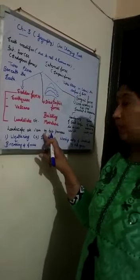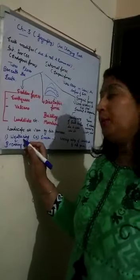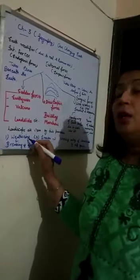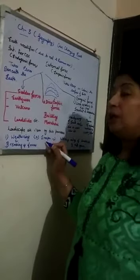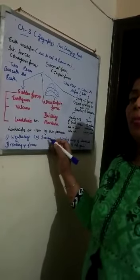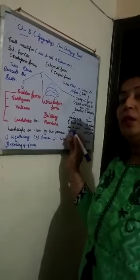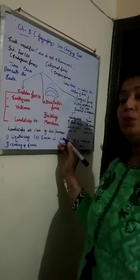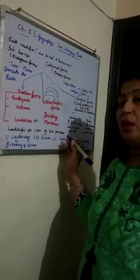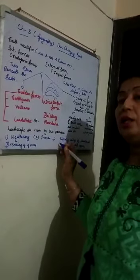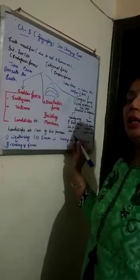The wearing away of the landscape is done by two processes: weathering and erosion. Weathering means the breaking up of rocks — the change in the earth's surface comes from the breaking of rocks. Erosion is caused by agents such as wind, water, glacier, etc. These forces work over the earth's surface and over time carry material along with them as they flow, wearing away the landscape.